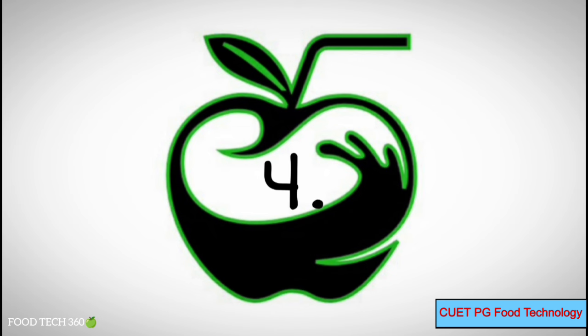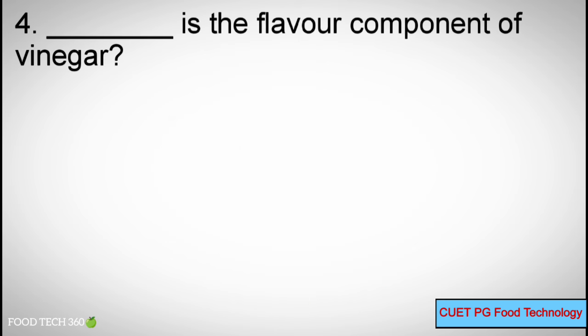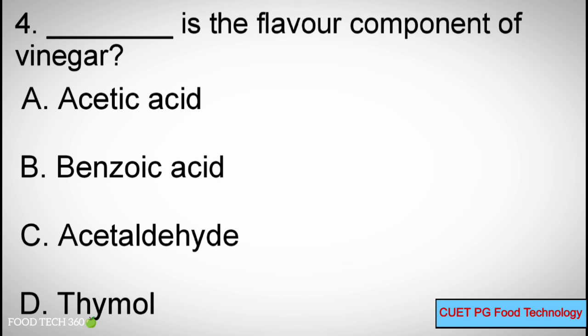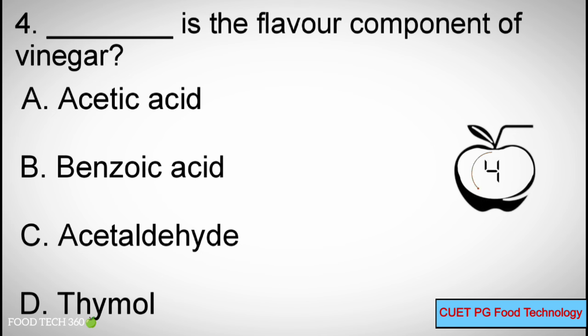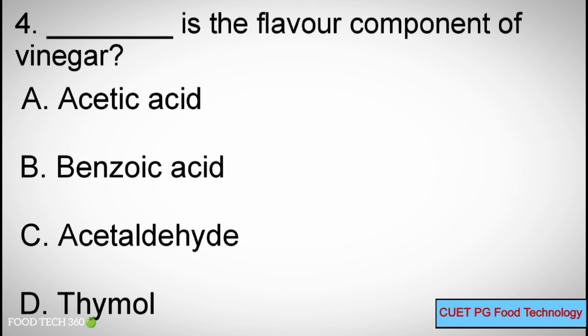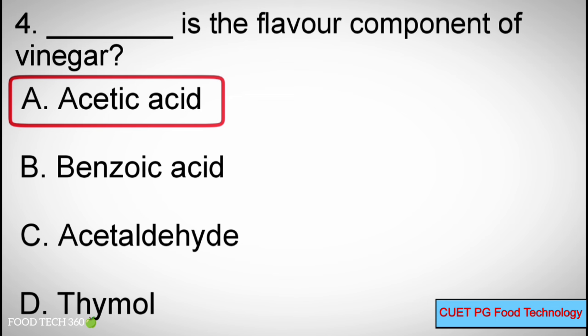Question number 4. Dash is the flavor component of vinegar. Options: A. Acetic acid, B. Benzoic acid, C. Acetaldehyde, D. Thymol. Correct answer: A. Acetic acid.